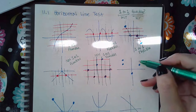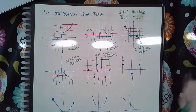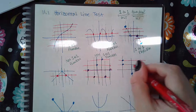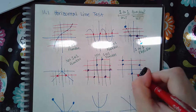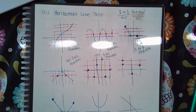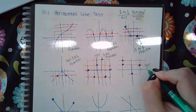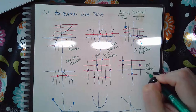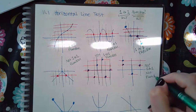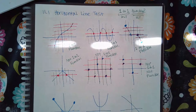Now here, this one will fail the vertical line test. And it doesn't pass the horizontal line test either. So it's not one-to-one, and it's not a function — it's bad in both ways.